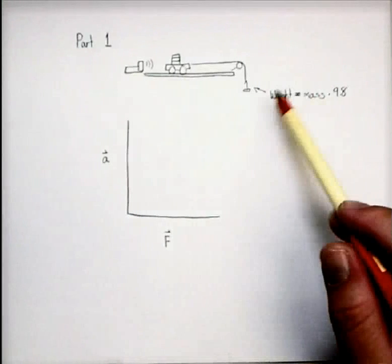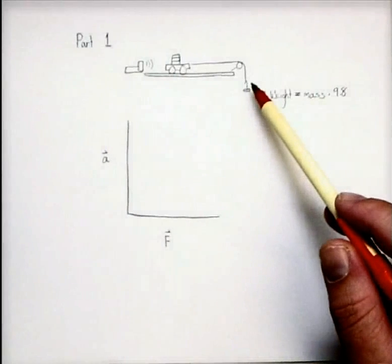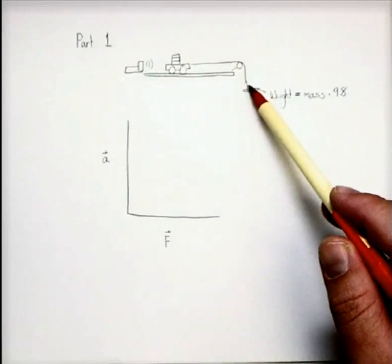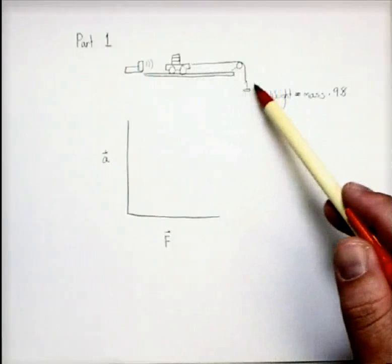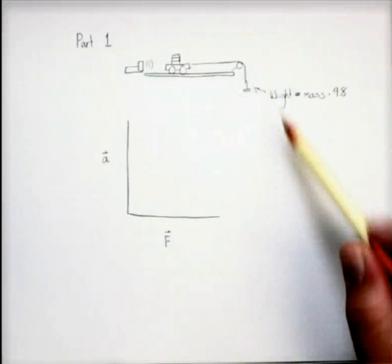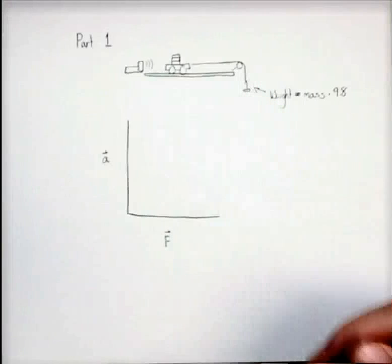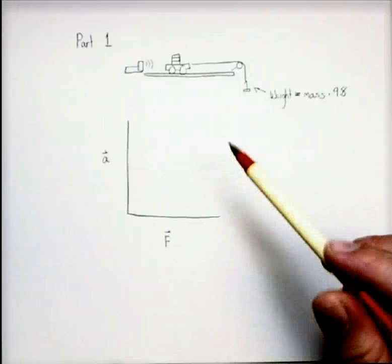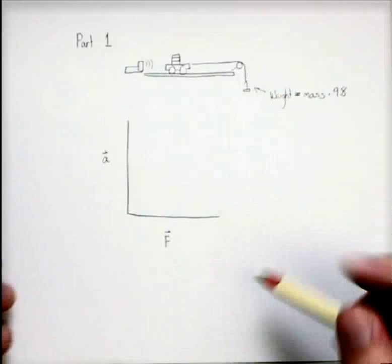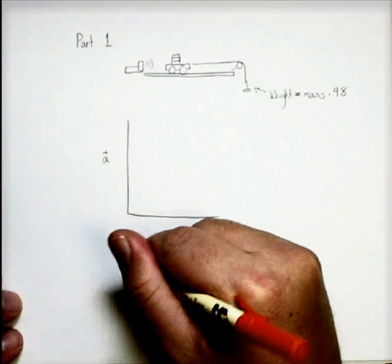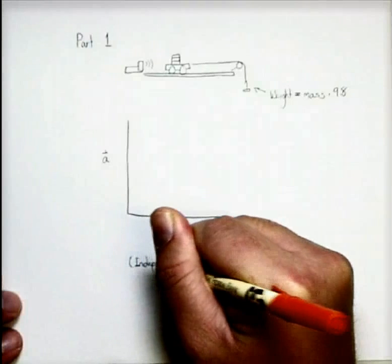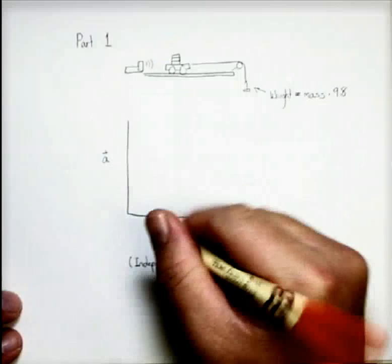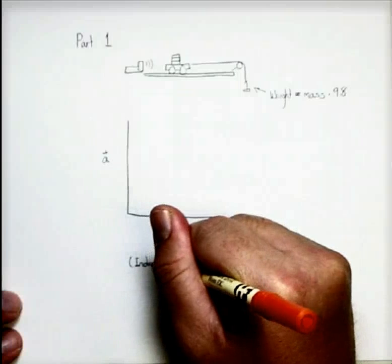In this case, force is the variable that we controlled. We chose what force the cart felt by choosing what weight to put on here, how many masses to put on that hanger. And so anytime you're in an experiment and you're choosing the values for a particular variable, we call that variable the independent variable. And that's always plotted on the x-axis.